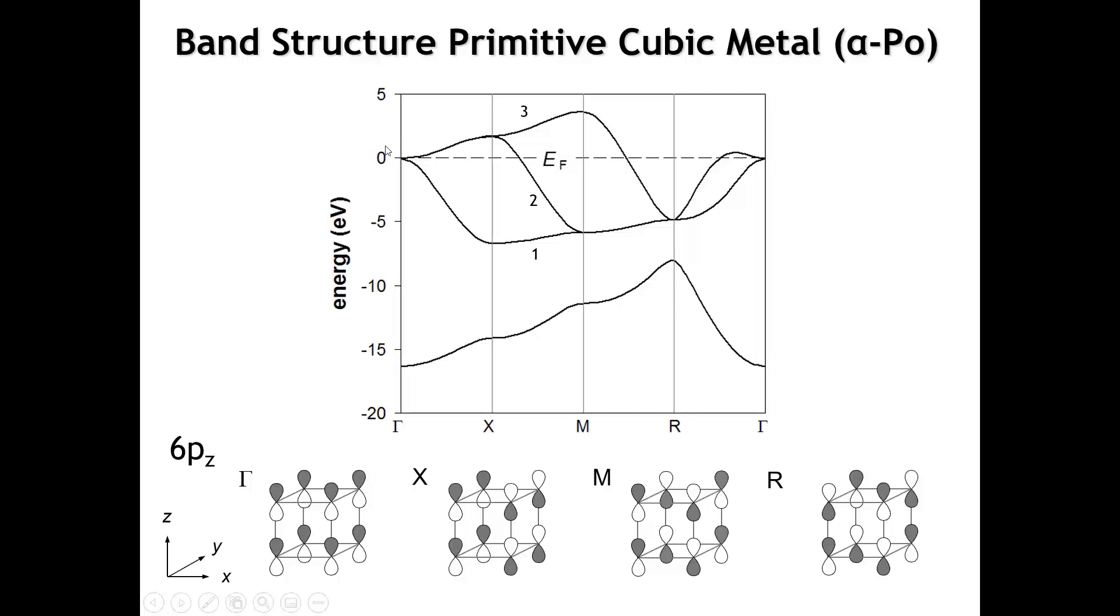At R and at gamma, all three orbitals are degenerate, but at the other points they're not, and that's simply because of the directionality of the p orbitals. Which of these three bands is the pz orbital? It's band number three, because at gamma, X, and M, it's going to be sigma star, so that's relatively high energy. Only band three does that. It goes up from gamma to X to M because the pi interactions are going from bonding to non-bonding to anti-bonding. Then it drops sharply when we go to the R point.